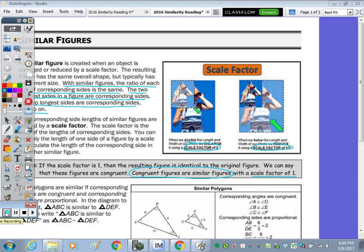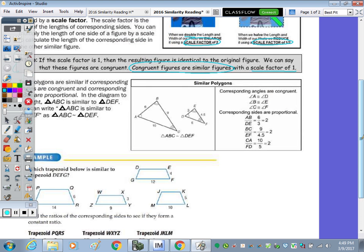We'll take a look at the difference between a similarity ratio and a scale factor on the back of the page. But first, let's just highlight the two main properties of similar polygons, and that's that corresponding angles are congruent, and you can see that in your similarity statement, the order matches, so A is congruent to D, B is congruent to E, and then C is congruent to F, and corresponding sides are proportional. So the product of the means is equal to the product of the extremes.